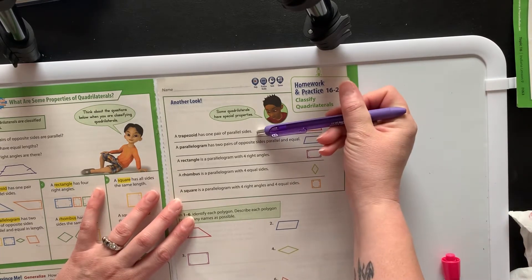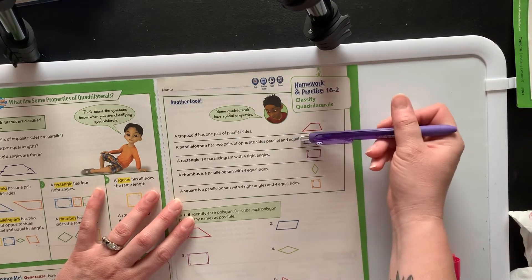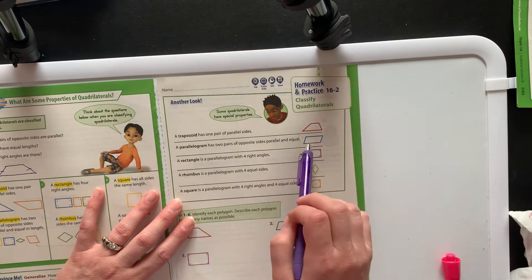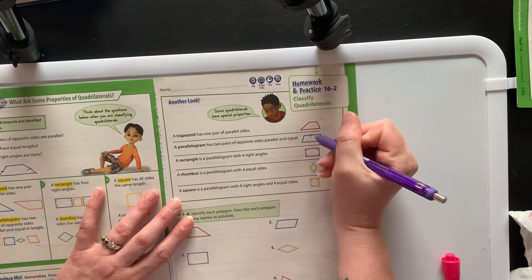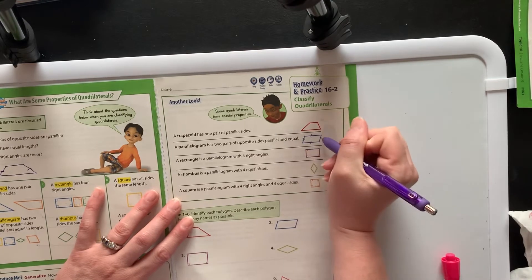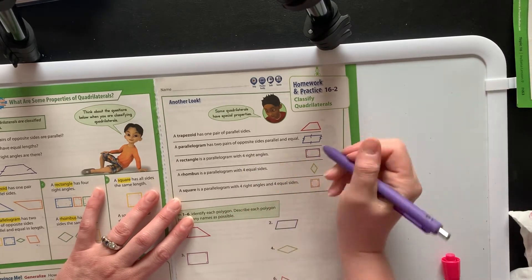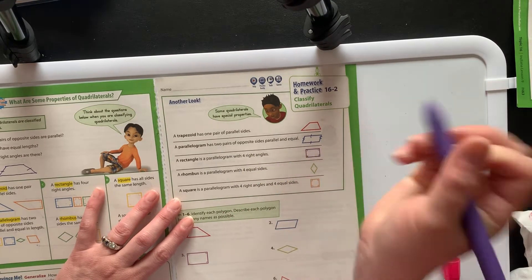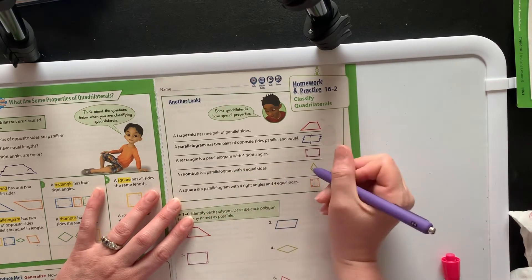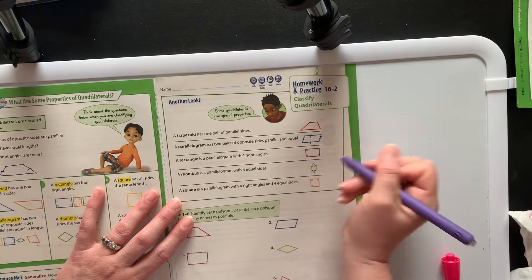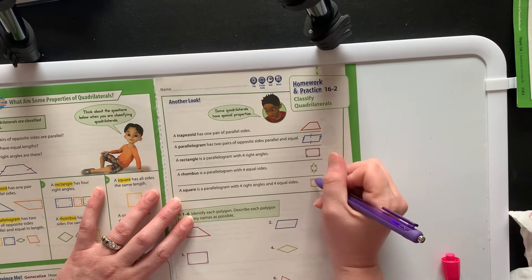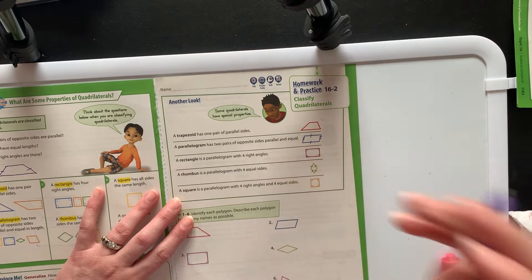Again, a trapezoid has one pair of parallel lines. A parallelogram has two opposite sides parallel, meaning this line is parallel to this line and this line is parallel to this line. A rectangle has four right angles. A rhombus has four equal sides, and a square has four right angles and four equal sides.